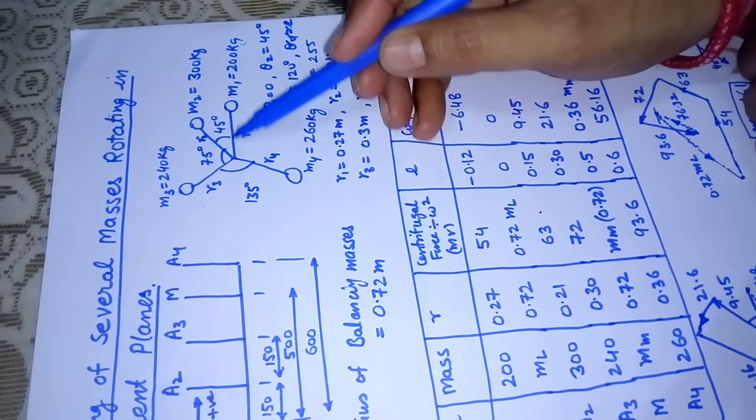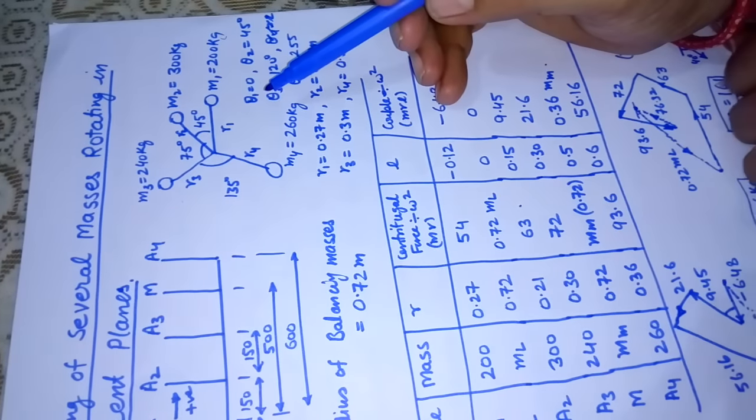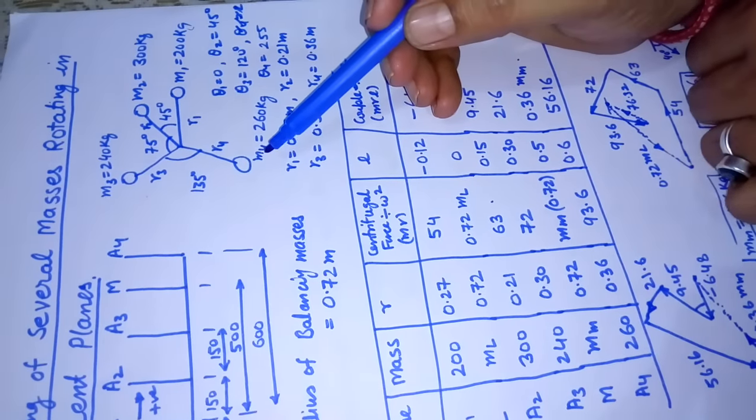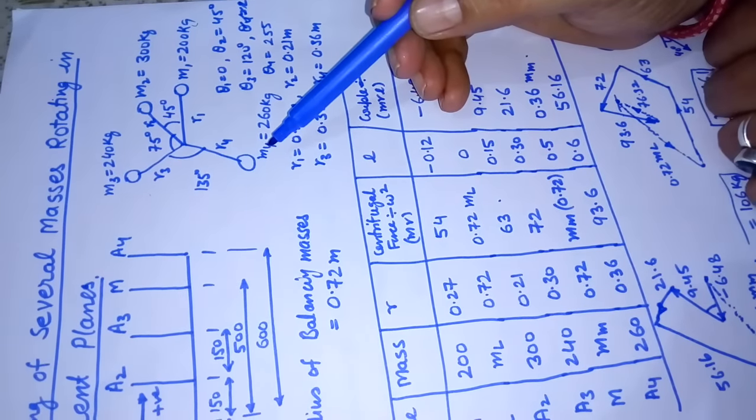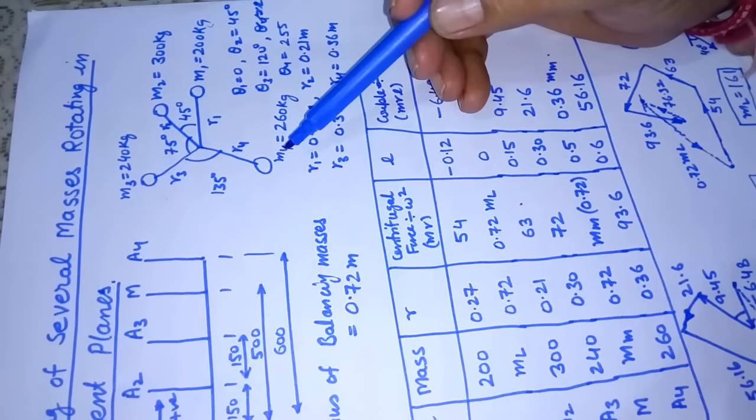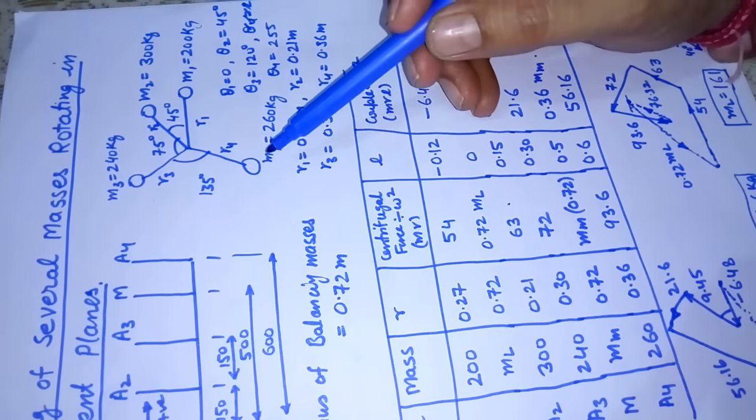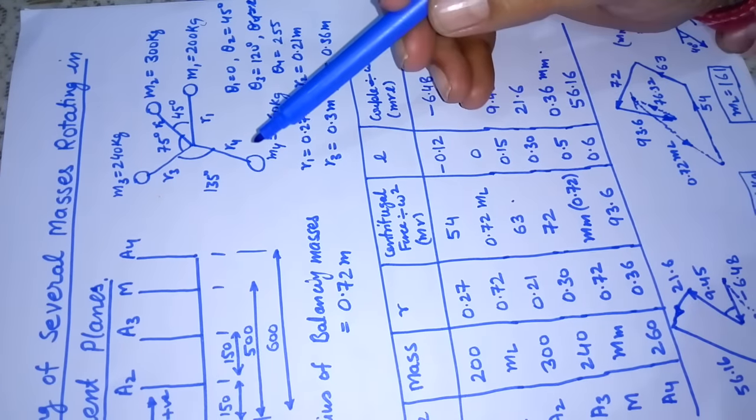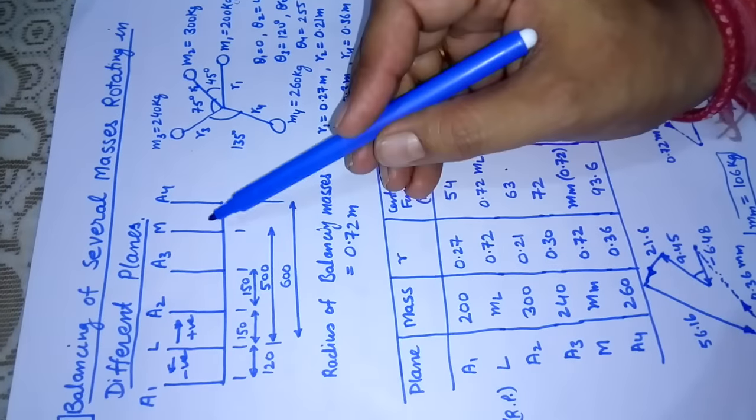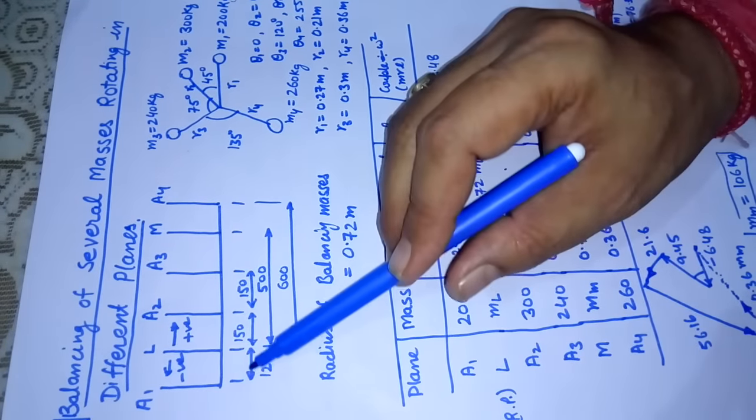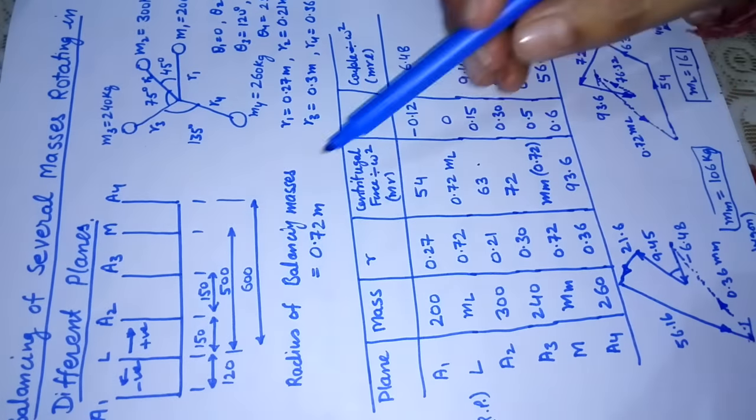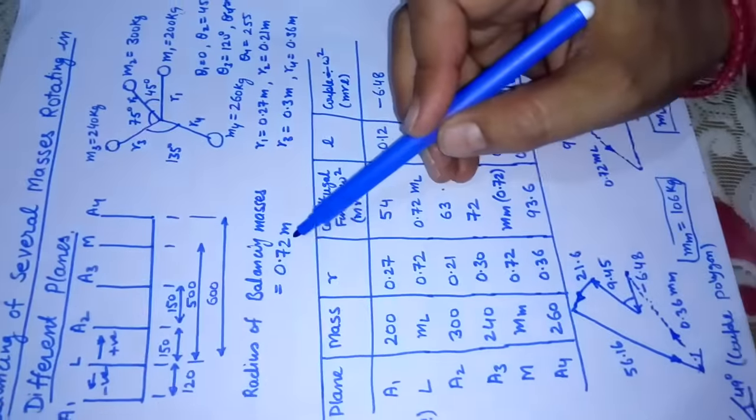When we are supposed to balance masses in different planes, we cannot balance it by a single plane. We have to implement two masses in two different planes. The location of these planes and their radial distances are already given in the problem. The planes are at l and m, their distance from first a1 is mentioned, and the radius of balancing masses is also given.